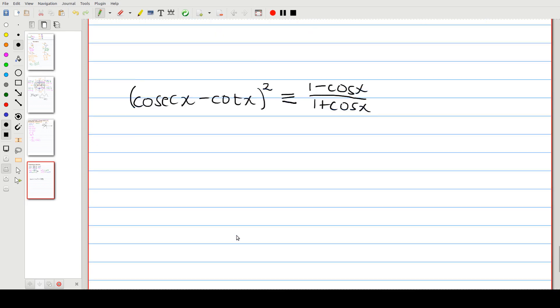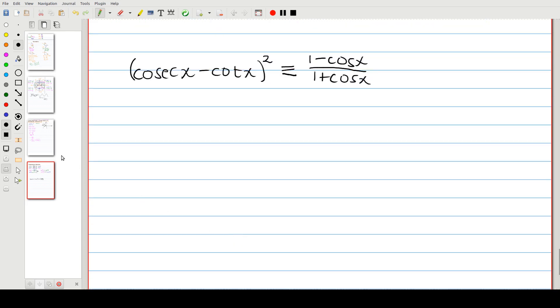Right let's do our one example and that'll be the end of the video. Okay so what we want to do is prove that the left hand side is equal to the right hand side. I'm going to start on the left hand side and turn everything into sine and cosine. So cosec is the same as one over sine x minus cot x, and cot x is the same as cos x over sine x.